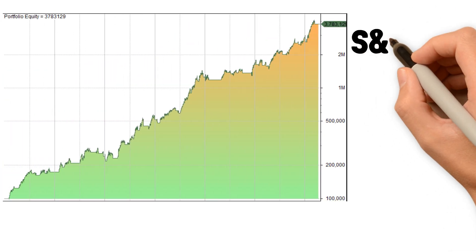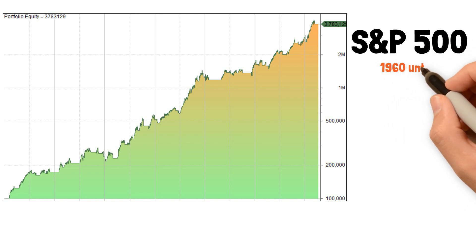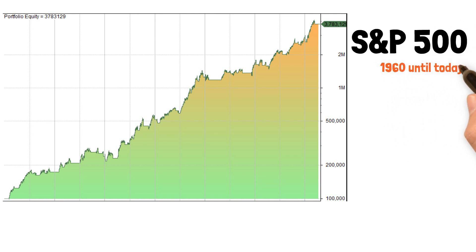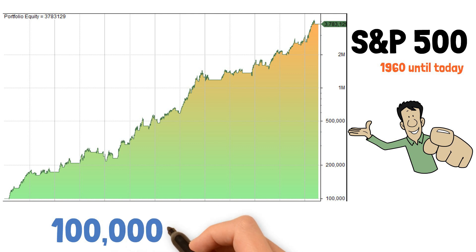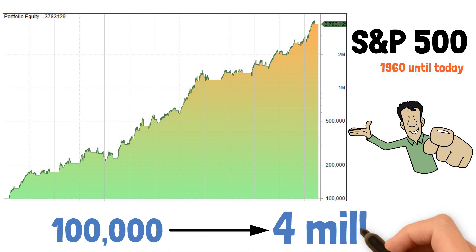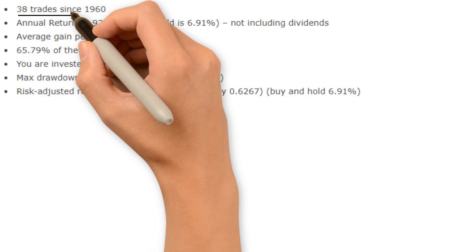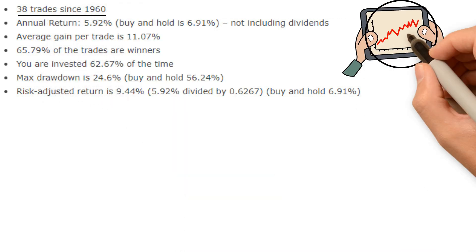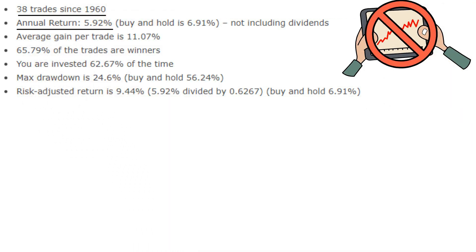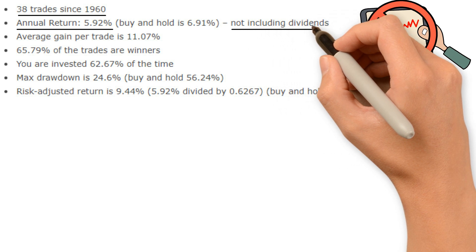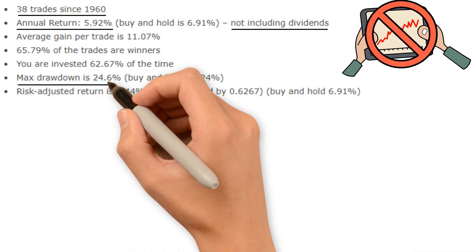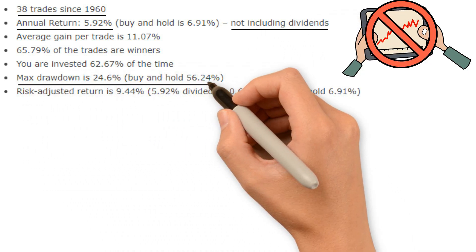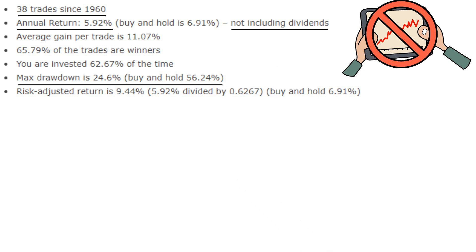We back-test S&P 500 from 1960 until today and it returns the equity curve shown on the screen. $100,000 invested in 1960 is worth almost $4 million today. It's only 38 trades since 1960, so it doesn't trade often. The annual return is almost 6%, not considering reinvested dividends. Please note that max drawdown is significantly lower compared to buy and hold — 24% versus 56%.